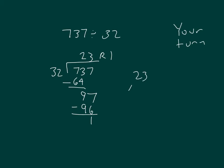Doing our check for that problem. 3 times 3 is 9. 3 times 2 is 6. Adding those together, we get 736. Add the 1, we get 737. Compare your work with that on the screen.